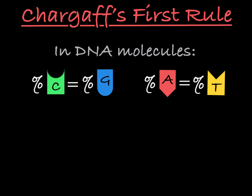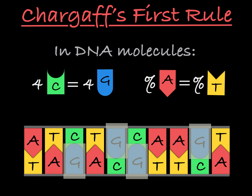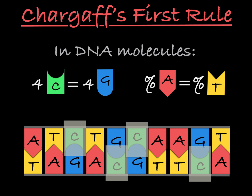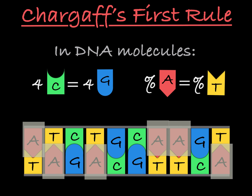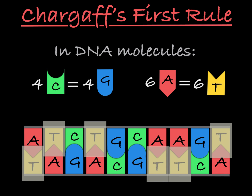This means that if a DNA molecule has four guanine nucleotides, then it must also have four cytosine nucleotides. And in the same molecule, if you have six adenine nucleotides, then you will also have six thymines.